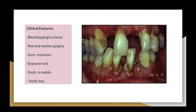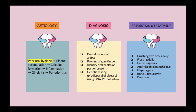From this picture, we can see that there is bleeding gingival tissue, red and swollen gingiva, gum recession, exposed roots, tooth mobility, and also tooth loss. These are the clinical features that can be seen.